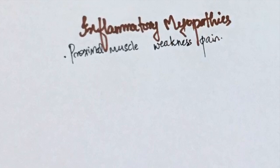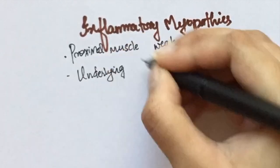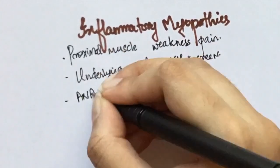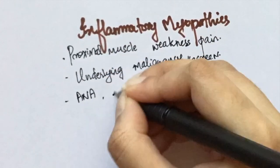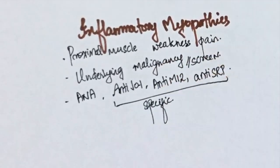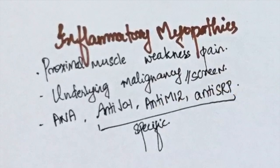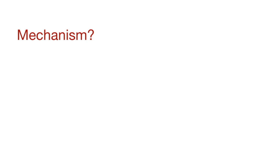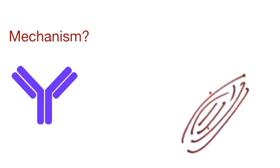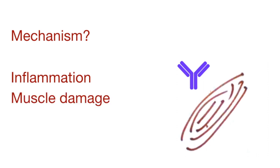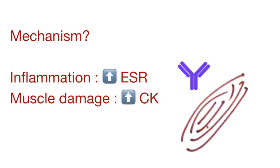Patients with inflammatory myopathies present with proximal muscle weakness and muscle pain. Always make sure you screen these patients for underlying malignancies. In these patients anti-nuclear antibodies will be positive, along with some other antibodies specific to this condition. Inflammatory myopathies are also associated with interstitial lung disease. Since there is inflammation as well as muscular damage, both ESR and CK levels will be high.